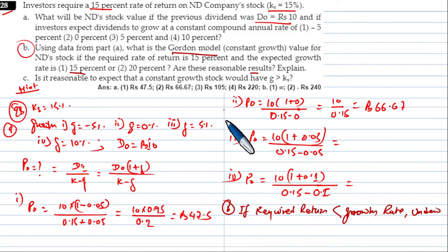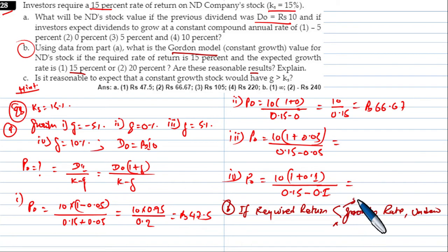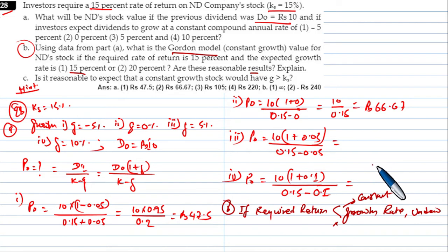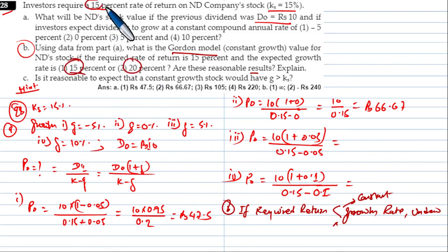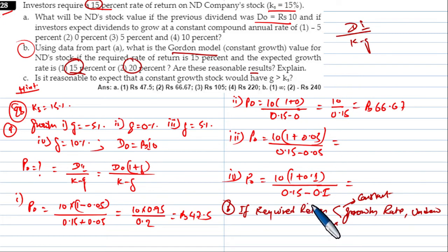Under the Gordon model with constant growth rate, if growth is 20% and required return is 15%, then D1 divided by (k - g) gives a negative denominator, which is negative — the answer becomes negative. In that case, you must use other models like the P/E ratio model or market multiplier model.